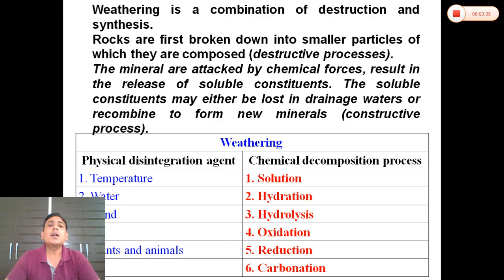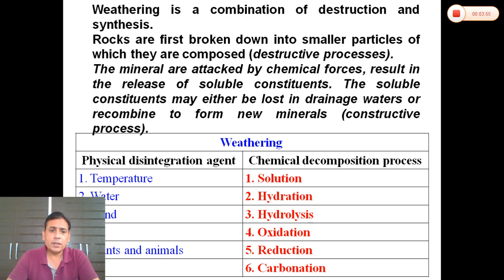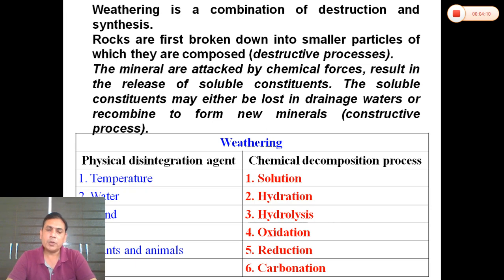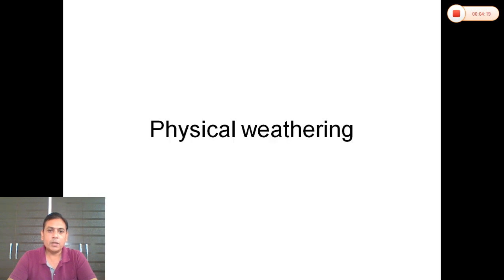Physical weathering agents include temperature, water, wind, ice, plants, and animals. Chemical weathering agents involve different processes such as solution, hydration, hydrolysis, oxidation, reduction, and carbonation. These chemical processes take place on the surface of rocks and minerals, causing them to break down into pieces.